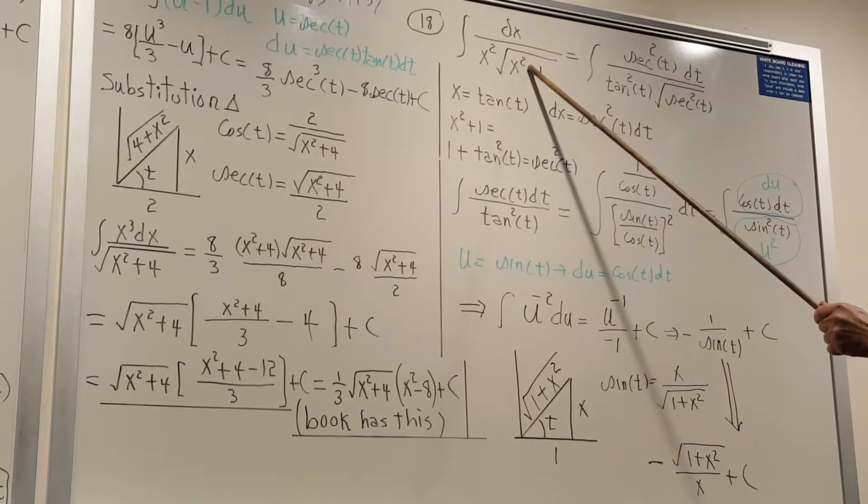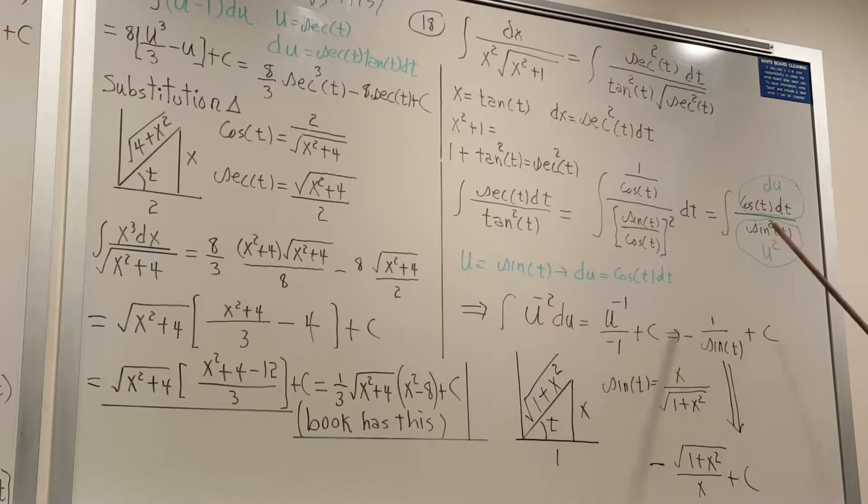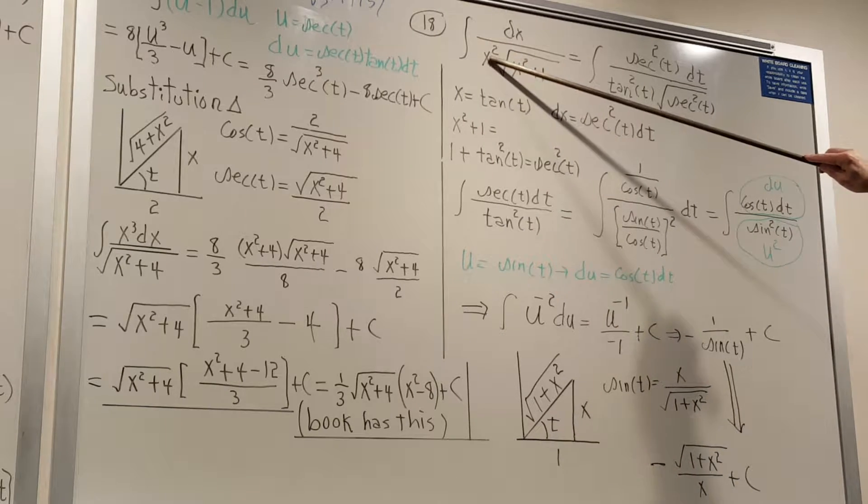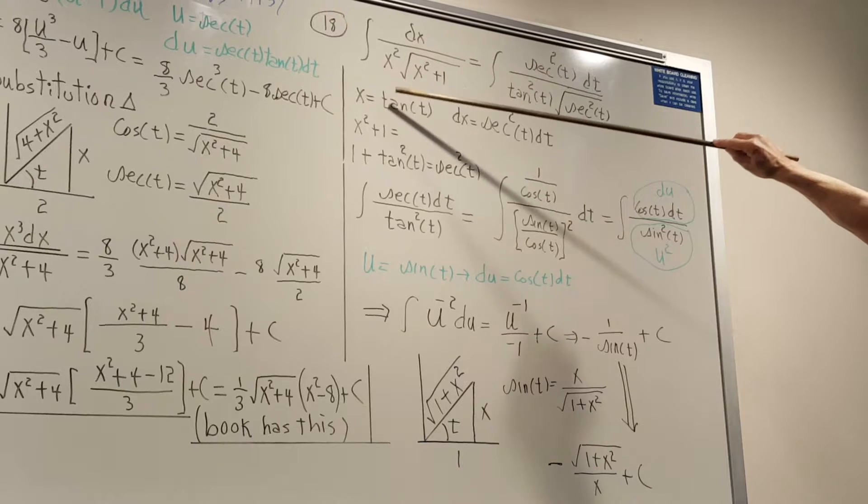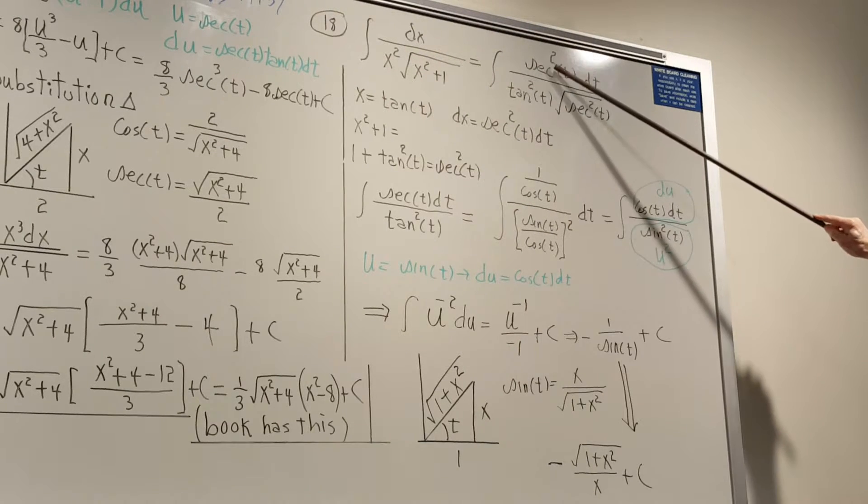So we have square root of secant squared, and then our x squared here will be tangent squared, and the derivative of tangent is secant squared.